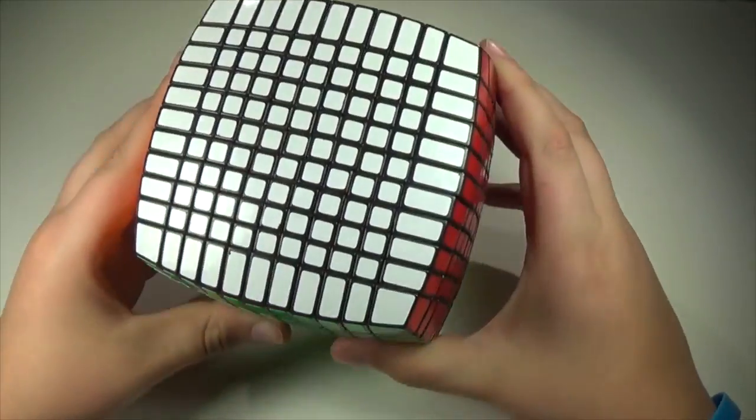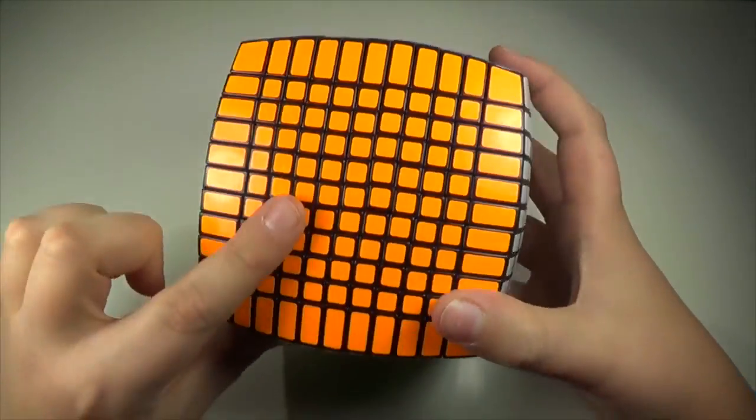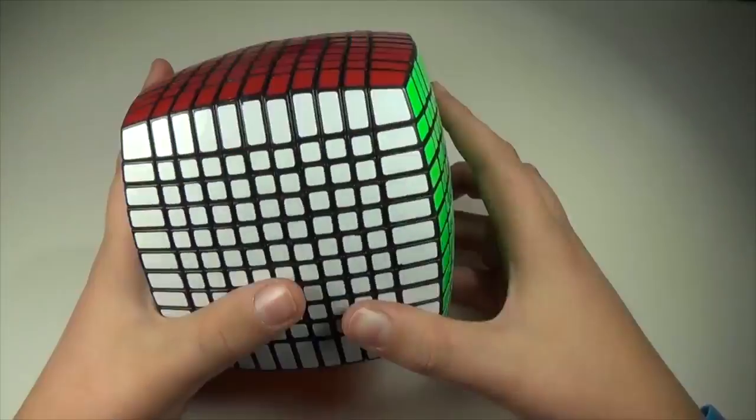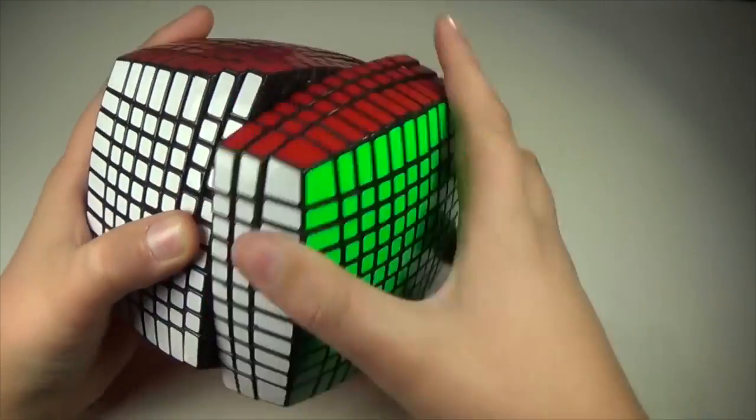When I got home, I re-stickered it with Cube Smith white, fluorescent yellow, fluorescent green, bright orange, bright blue, and regular red. This cube turns really well, and is broken in nicely after about 5 solves.